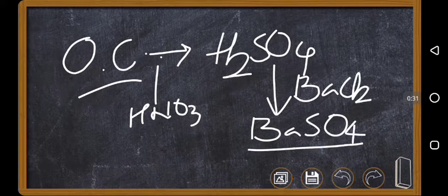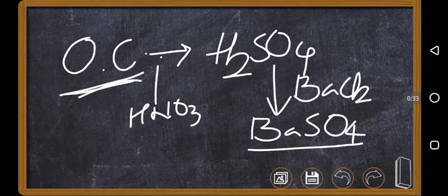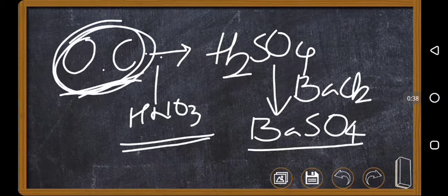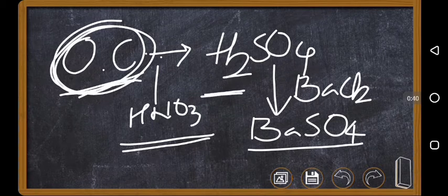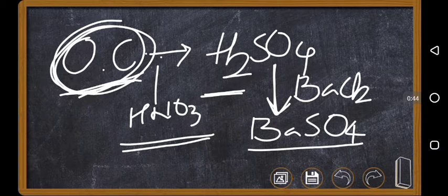A known mass of organic compound is taken and treated with fuming HNO3, so that the sulphur present in the organic compound is converted into sulphuric acid. This sulphuric acid on treatment with barium chloride turns into barium sulphate.